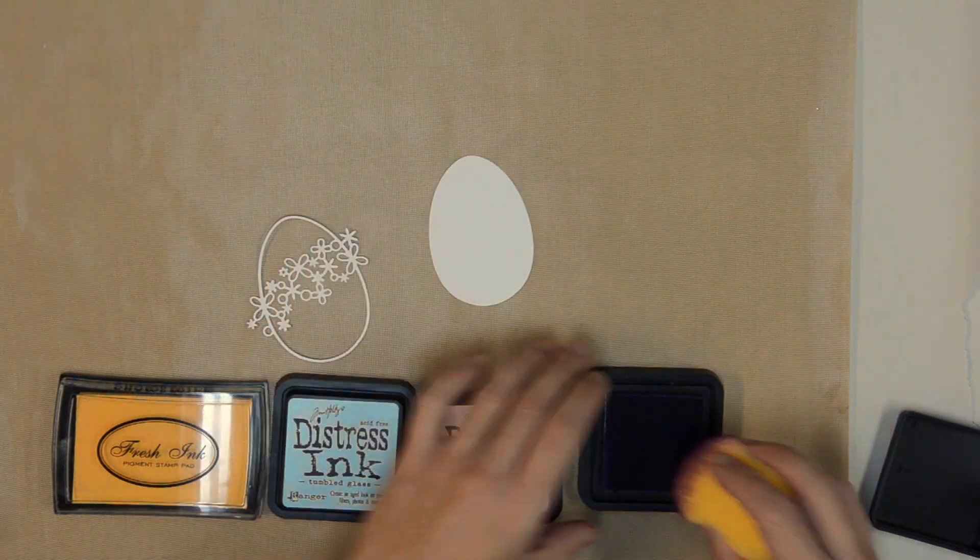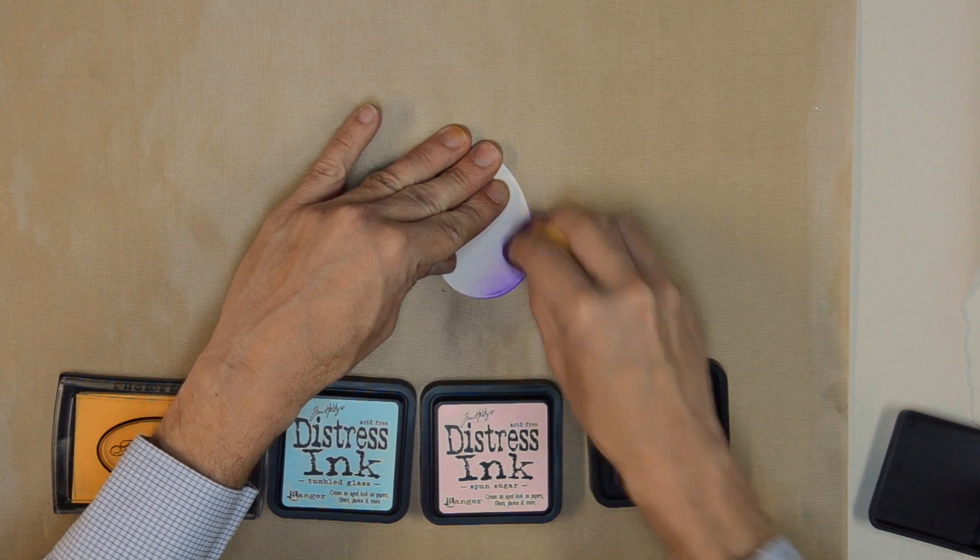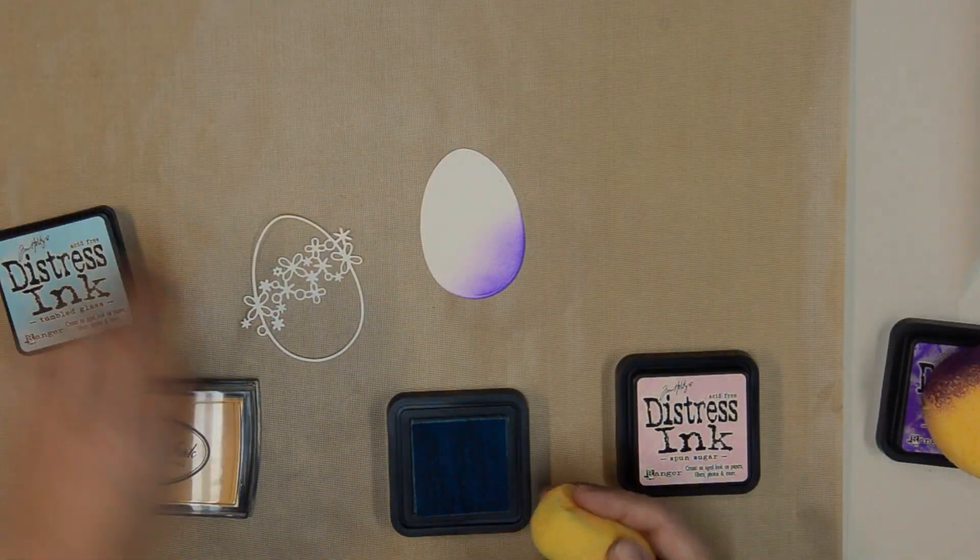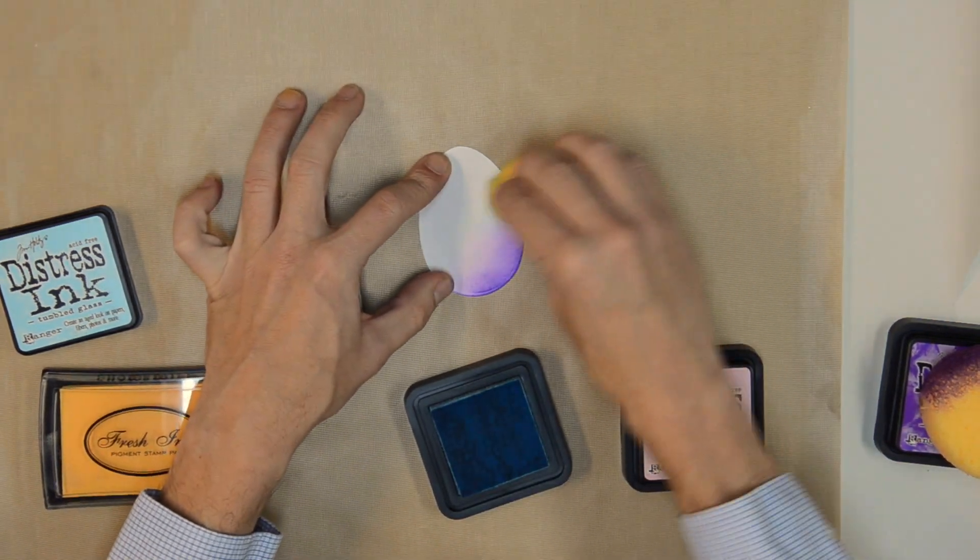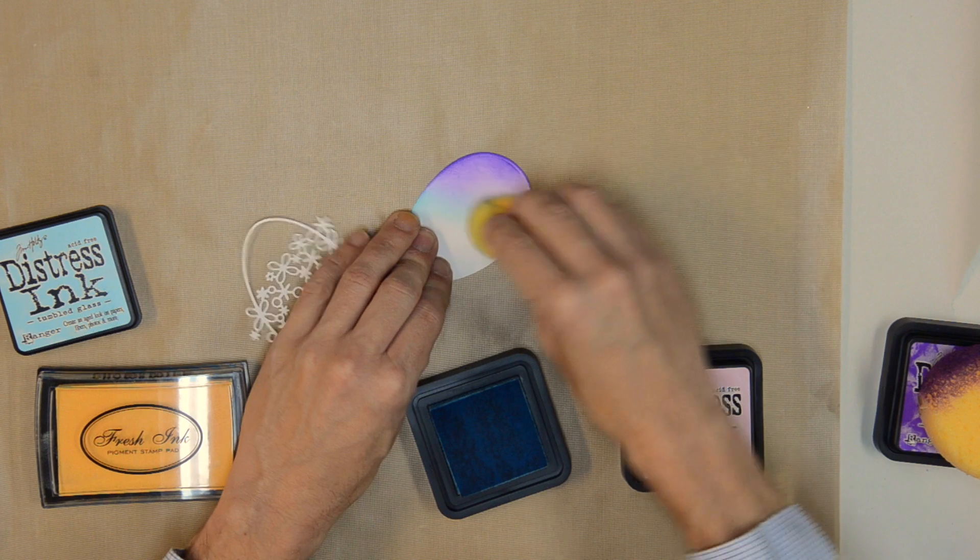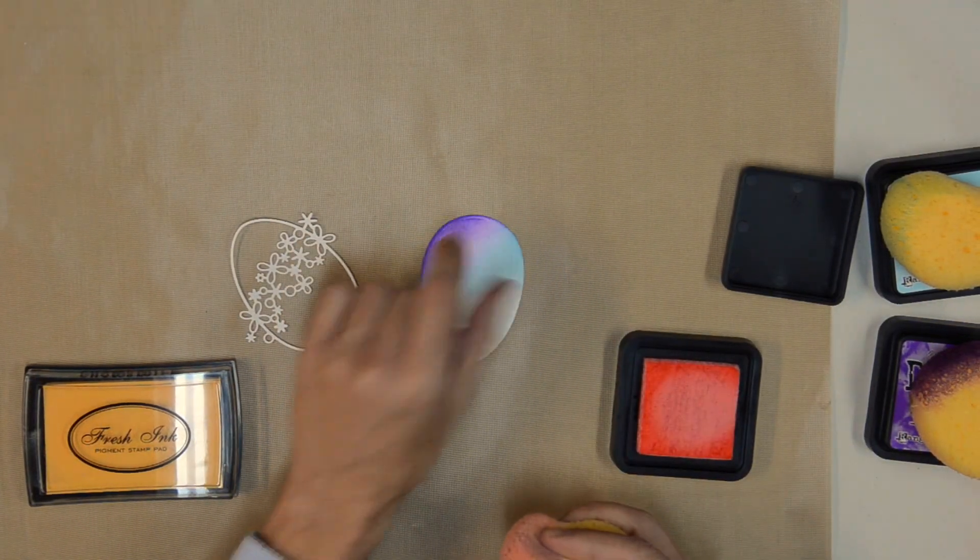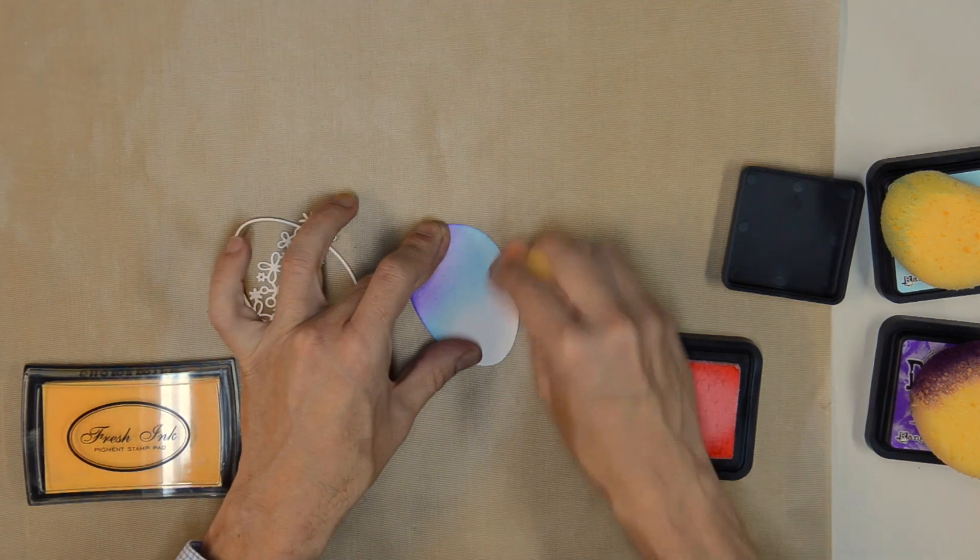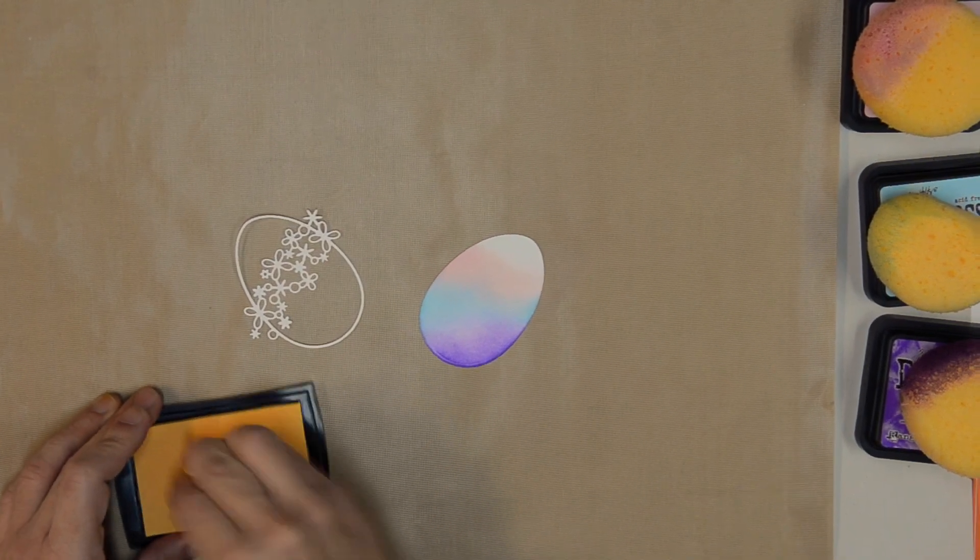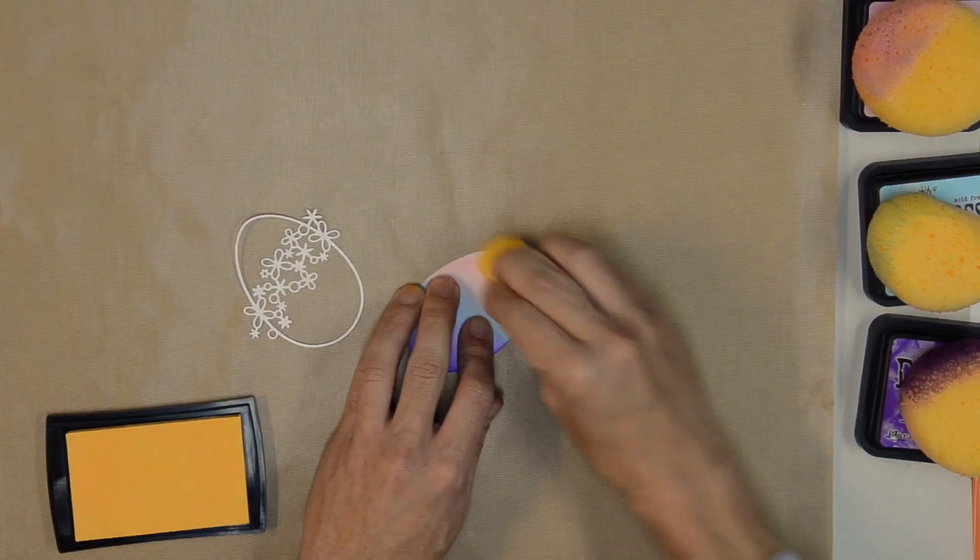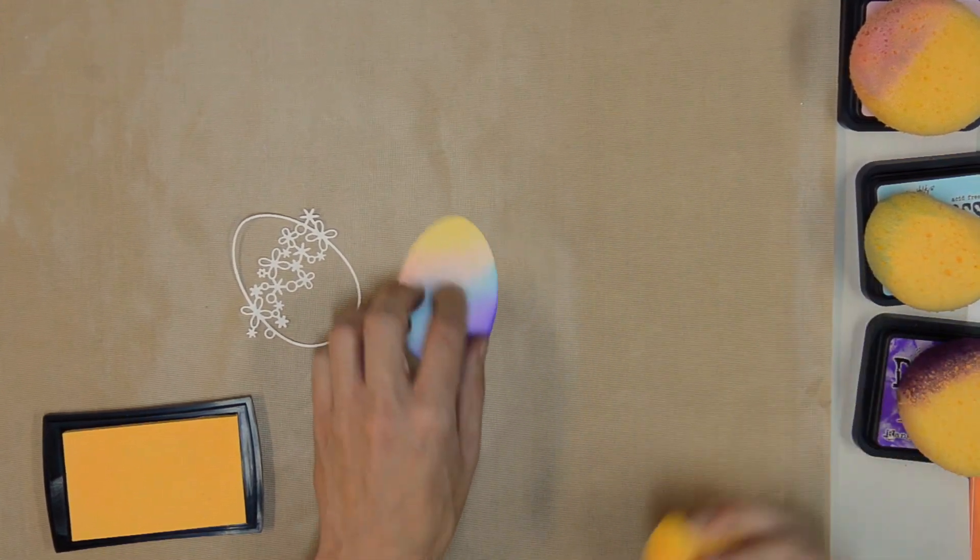I've chosen four colors to decorate my Easter egg. The first one is Distress Ink Wilted Violet. I'm just going to rub it on in a circular motion, and then follow that up with another Distress Ink Tumbled Glass, which is a really nice pale blue color. After that, I'm going to apply yet another Distress Ink, Spun Sugar, and I want to make sure as I'm applying these colors that I'm slightly overlapping the color that I just previously applied. Finally, I'm going to use a fresh ink color called Chamomile, a nice soft yellow, to complete this pastel Easter egg dyed look.